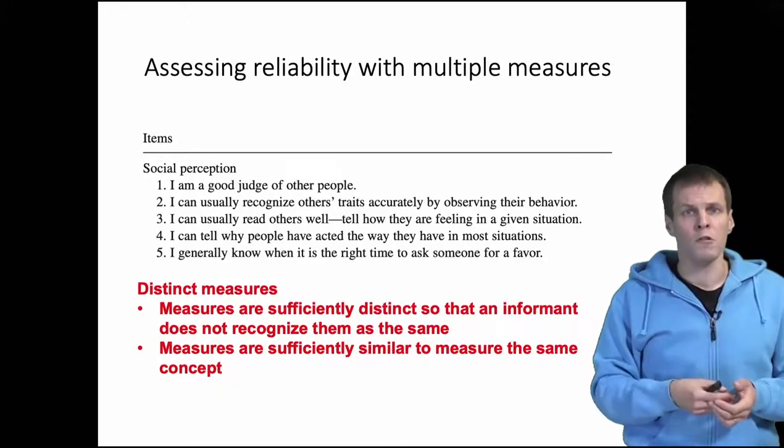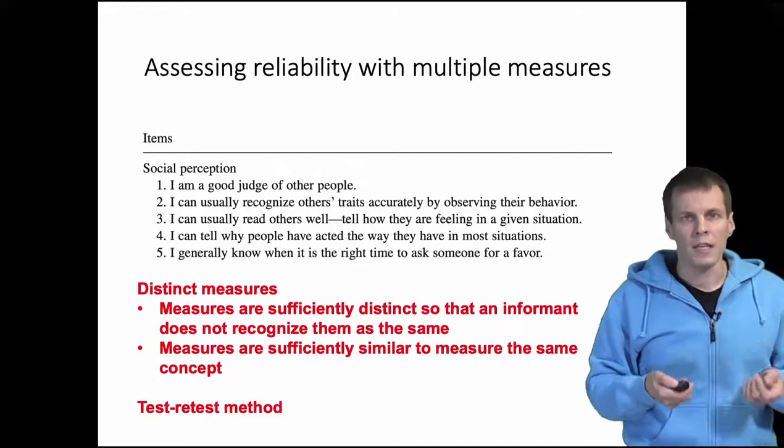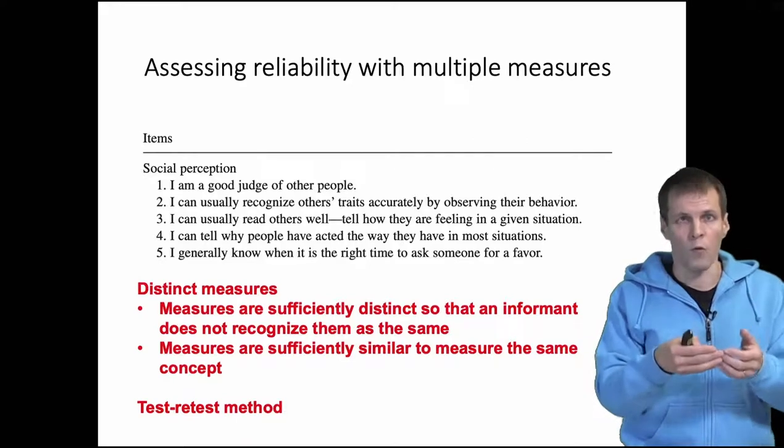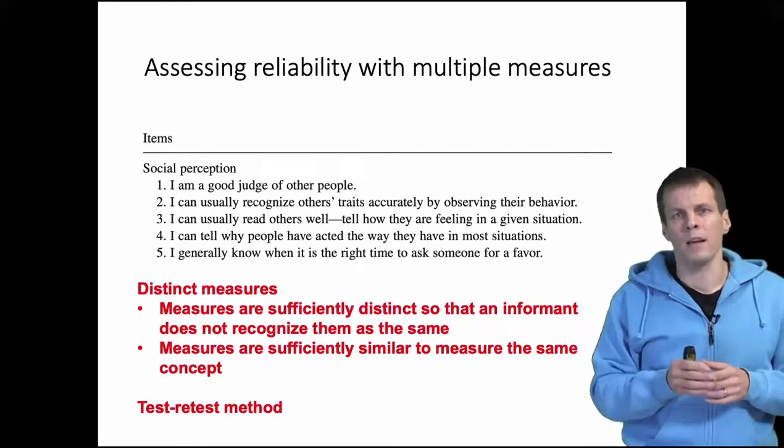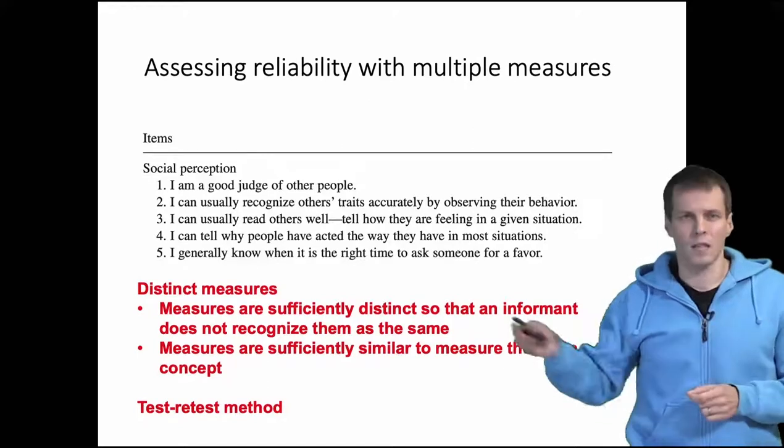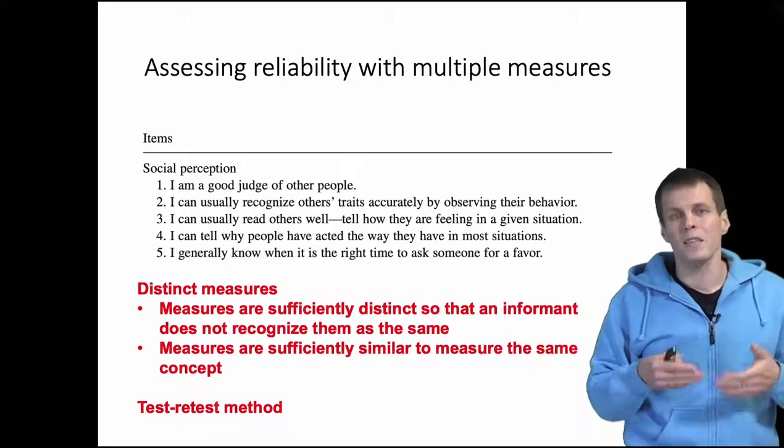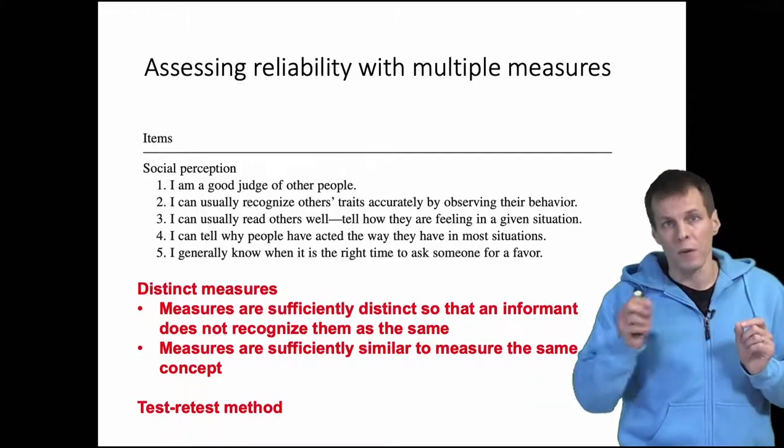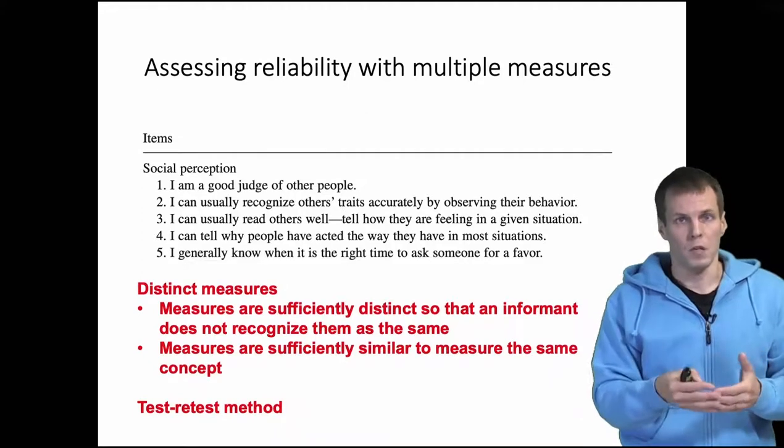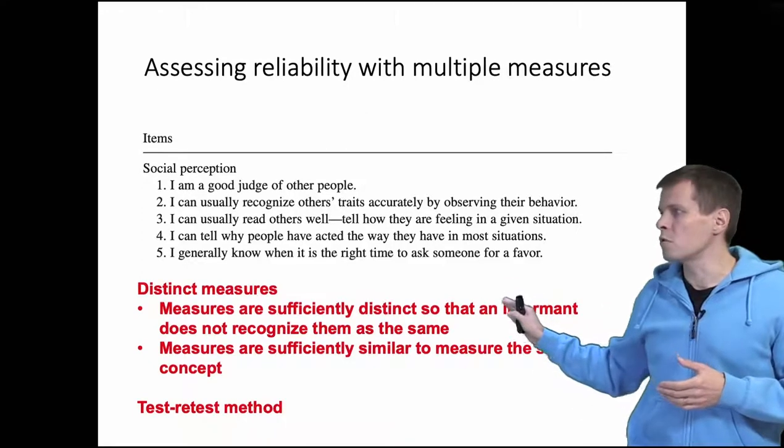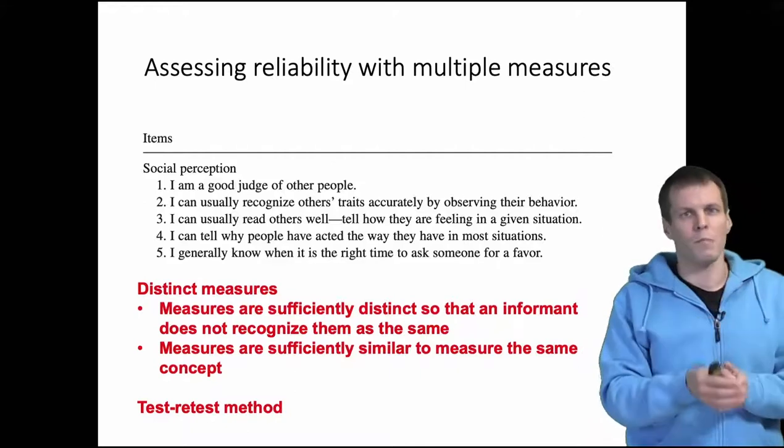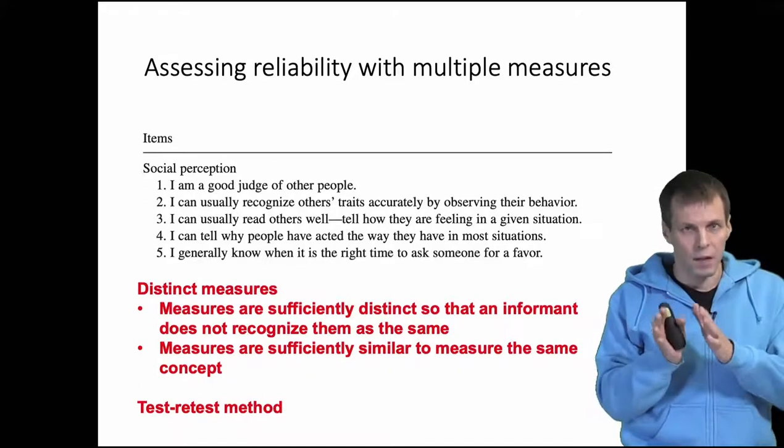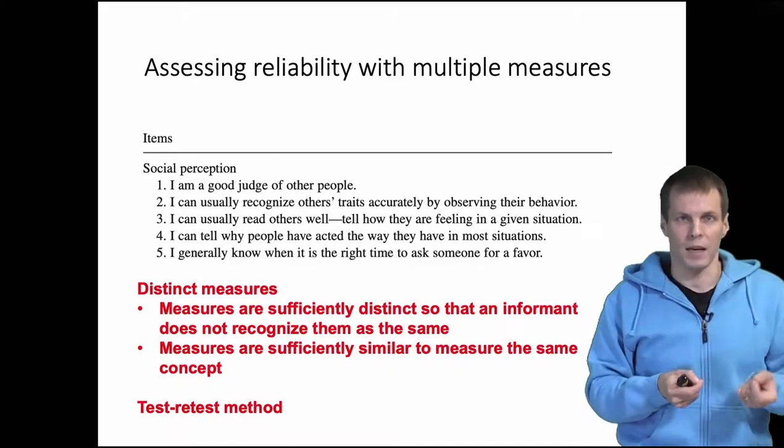There is also another strategy for assessing reliability called test-retest reliability, where we actually ask the same question over and over with a time delay. But this is a bit problematic because the time delay needs to be days or weeks, or otherwise the person will remember their past answer and will just repeat it without reconsidering the question. So in practice, most studies use these distinct measures. We ask, for example, three or five different questions that are all supposed to measure the same thing, but they're different enough that the person doesn't realize that they are being asked the same thing.